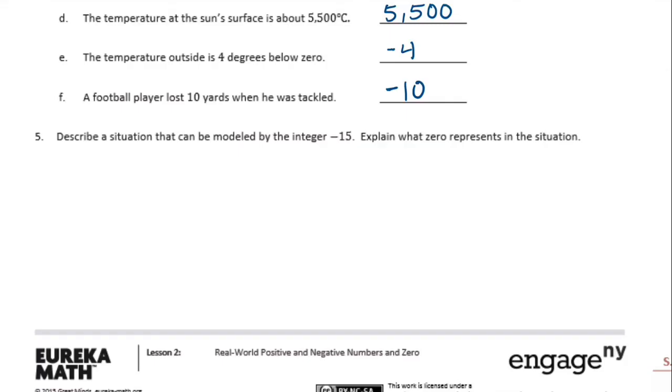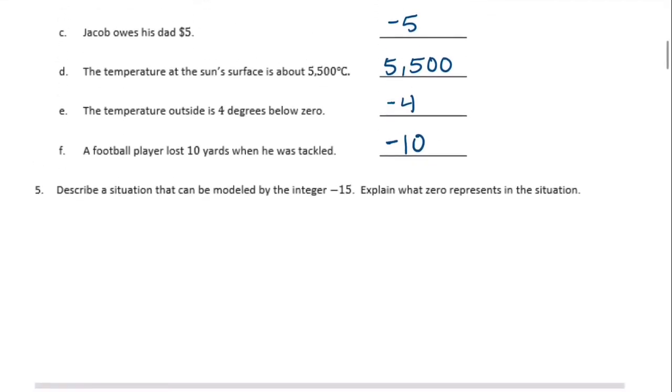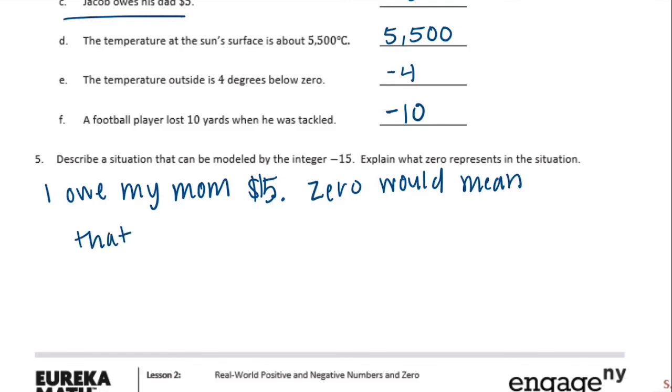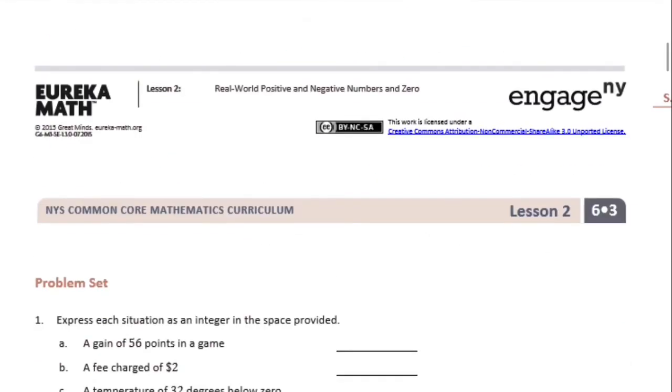Describe a situation that can be modeled by the integer negative 15. Explain what zero represents in this situation. So maybe you owe someone money. Maybe we can just go back to owing your dad. Like, Jacob owes his dad $5. We could say, I owe my mom $15. So let's explain what the zero represents in this situation. Well, zero would mean that I don't owe my mom anything. And that is all.